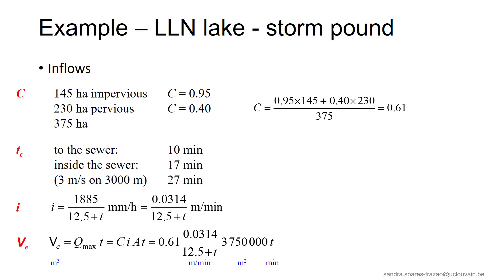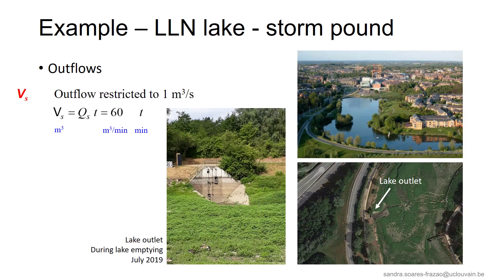We need, of course, to make sure that all the units match, and it was decided here to express the duration of the rain in minutes. The lake has also an outlet, that can be seen here from these pictures taken when the lake was emptied for a maintenance. Considering that the outflow to the Malaise stream is restricted to 1 m per second, we obtain the following expression for the volume exiting the reservoir during a rainfall of duration t.